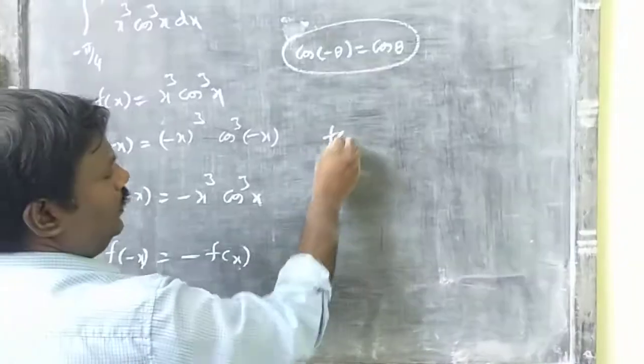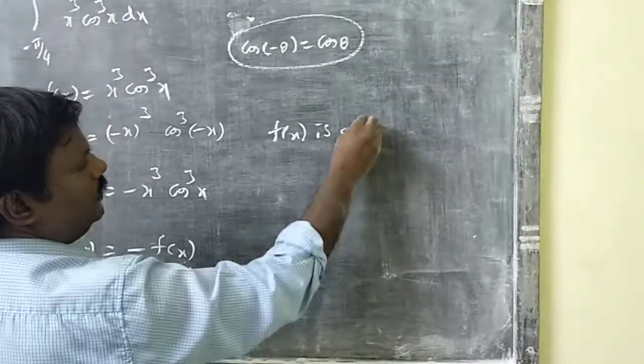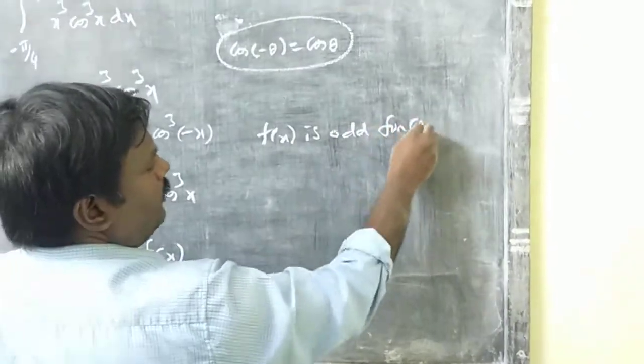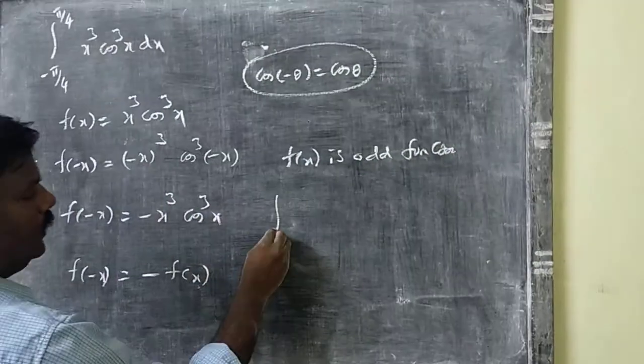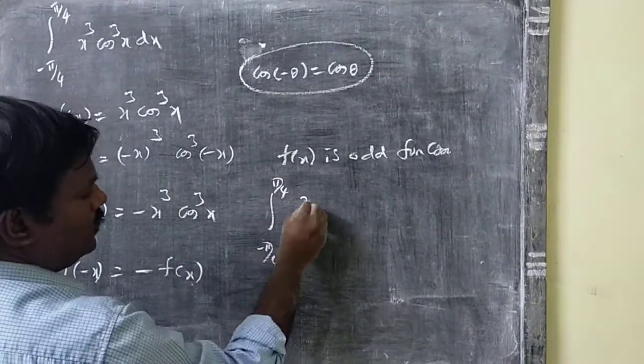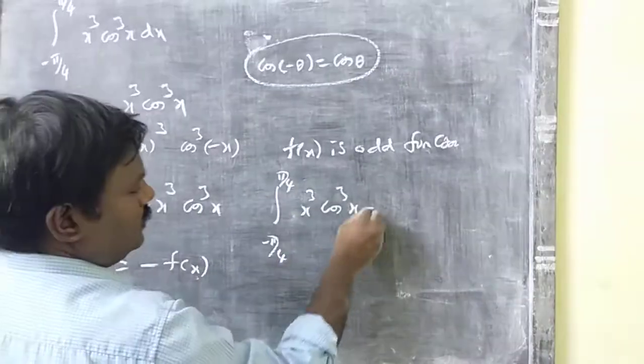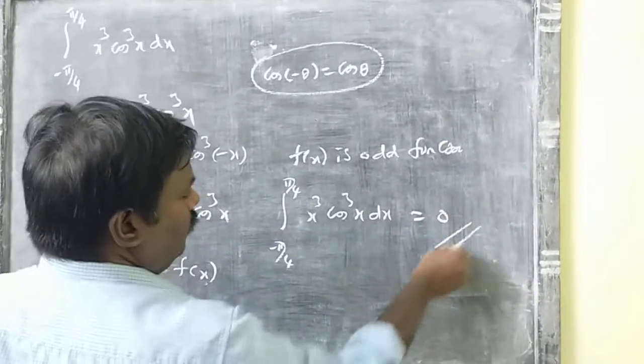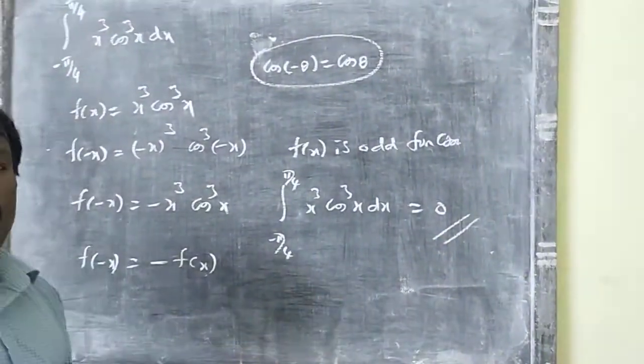So you can write f(x) is what? An odd function. Therefore, the integral from -π/4 to +π/4 of x³ cos²x dx will be 0 according to the given formula. Thank you.